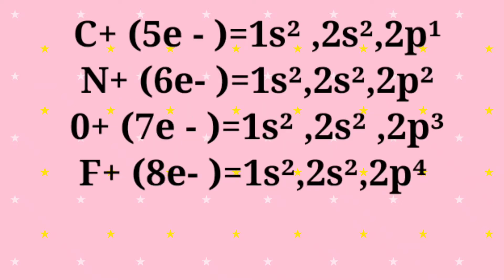Carbon plus has 5 electrons in their monopositive cation configuration: 1s², 2s², 2p¹. Nitrogen plus has 6 electrons: 1s², 2s², 2p². Oxygen plus has 7 electrons: 1s², 2s², 2p³. And F plus contains 8 electrons configuration: 1s², 2s², 2p⁴.